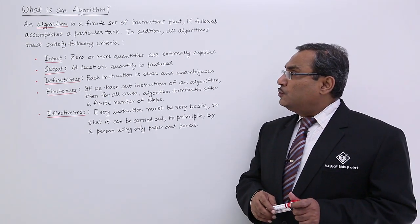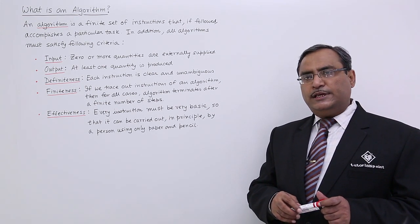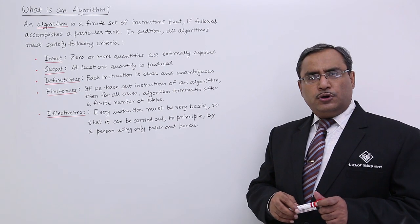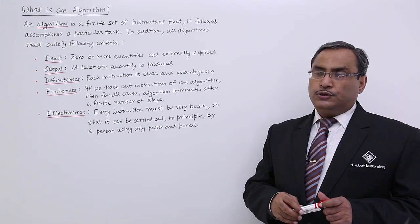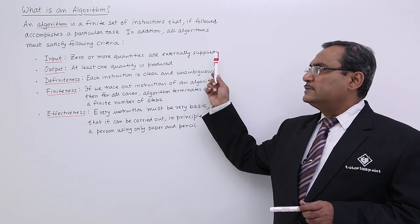Input: Zero or more quantities are externally supplied. That means an algorithm can have zero inputs, one input, or more than one input.